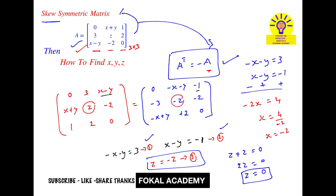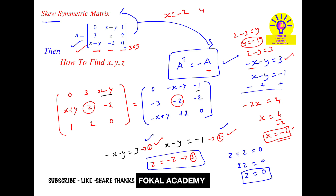Now substitute x equal to minus 2 into equation 1. It becomes minus of minus 2, which is plus 2, minus y equal to 3. So 2 minus 3 equal to y, therefore y equal to minus 1. So x equal to minus 2 and y equal to minus 1.